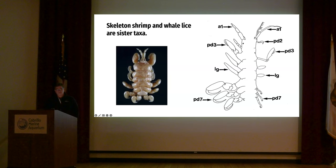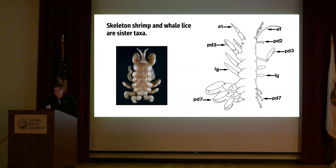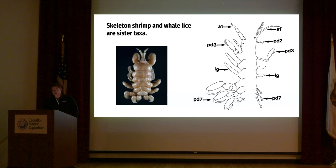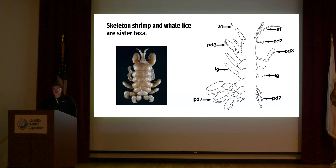I mentioned the skeleton shrimp on that last slide. If you look at the line drawing I did on the left, you've got a whale louse, and on the right a skeleton shrimp. These are completely different beasts, but when you look at the antennae marked A1, the periopods (PD), and the lateral gills (LG), and compare the halves of the organisms I've put together, their morphology is actually quite similar. I believe the caprellids, or skeleton shrimp, to be the sister taxon — the most closely related organisms — to the whale louse.